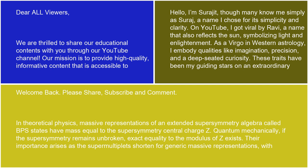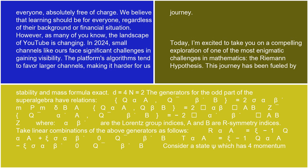In theoretical physics, massive representations of an extended supersymmetry algebra called BPS states have mass equal to the supersymmetry central charge Z. Quantum mechanically, if the supersymmetry remains unbroken, exact equality to the modulus of Z exists. Their importance arises as the super multiplets shorten for generic massive representations, with stability in the mass formula exact.